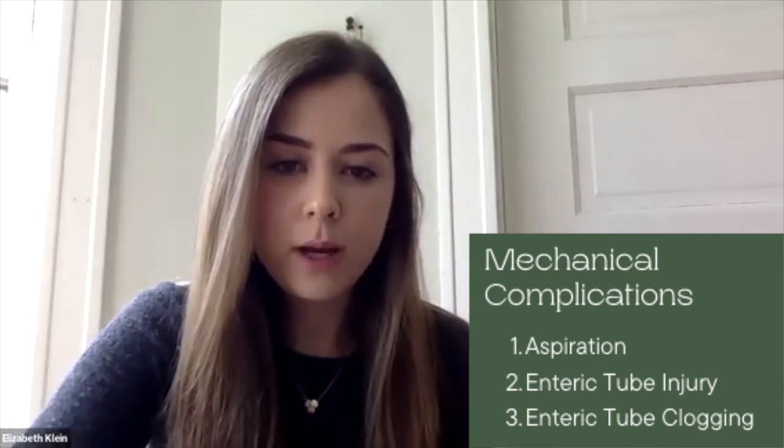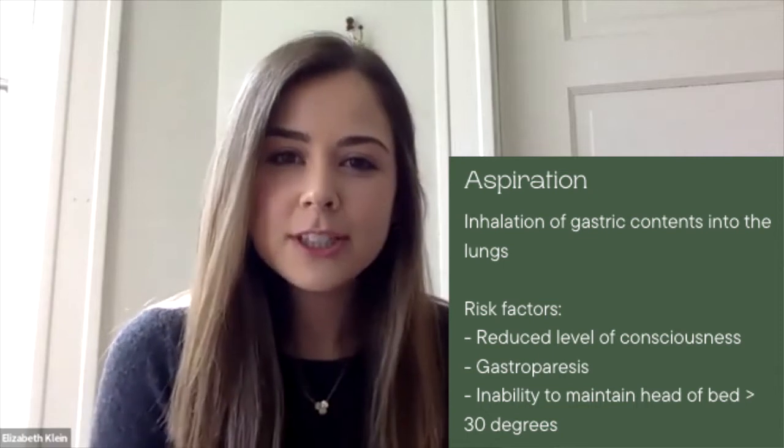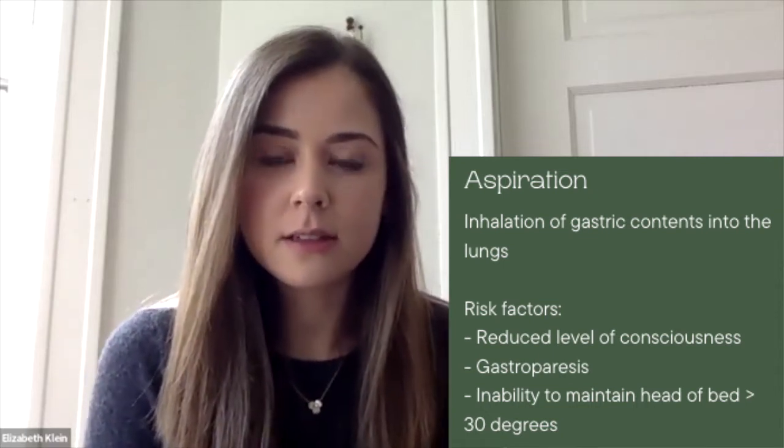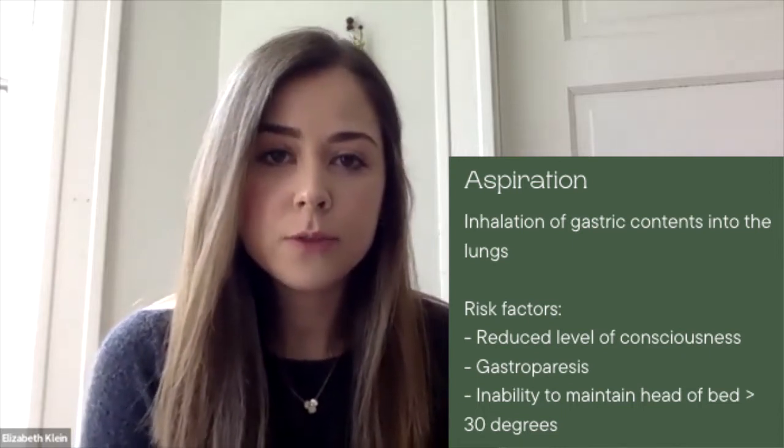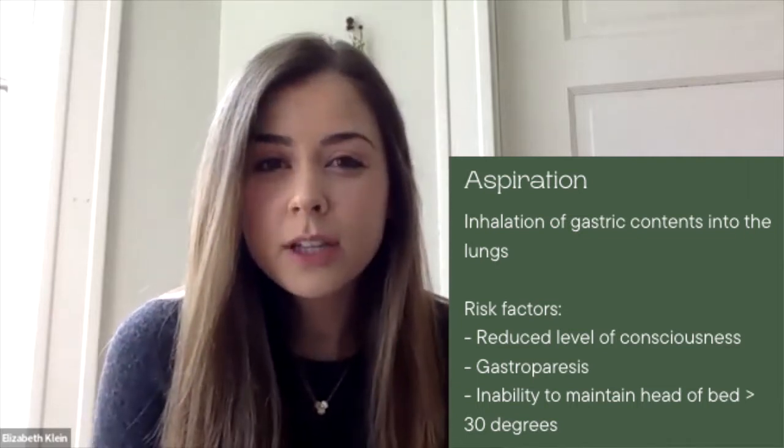Next up will be mechanical complications. This includes aspiration, enteric tube injury, and enteric tube clogging. Aspiration is defined as inhalation of gastric contents into the lungs. This can happen from tube feeding itself — it gets infused into the stomach and a patient might have reflux or vomiting, and it ends up going down their trachea and into their lungs. It can also be oral secretions they're not able to manage appropriately. This can be a severe complication because it can lead to pneumonia and serious consequences.